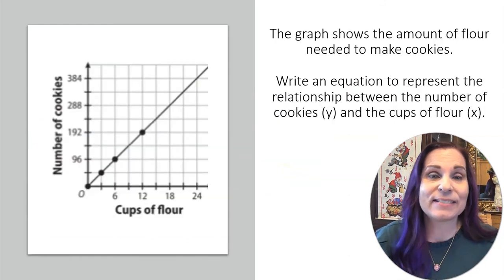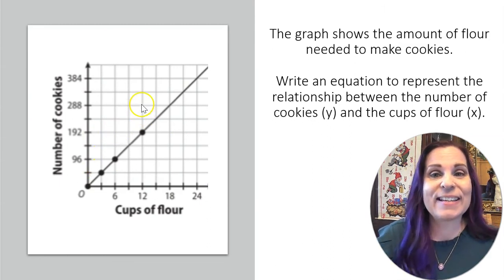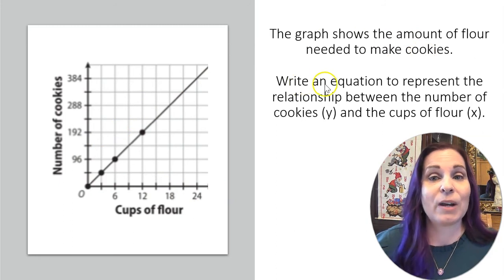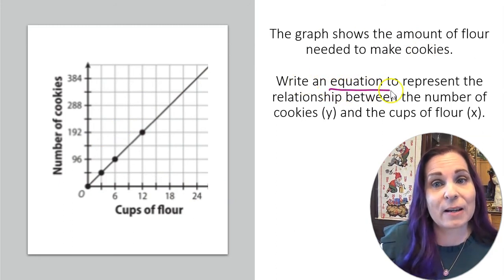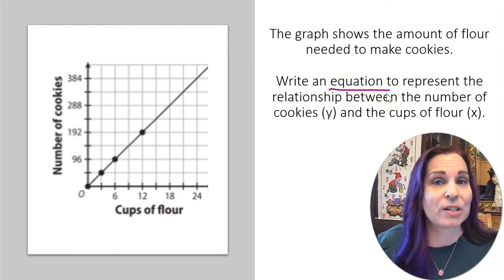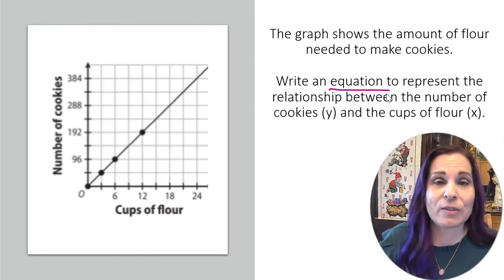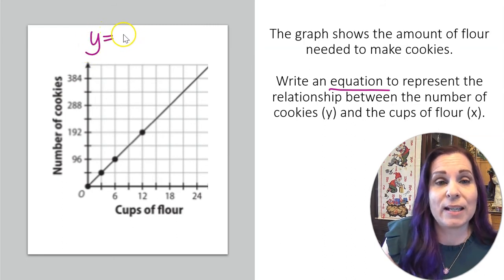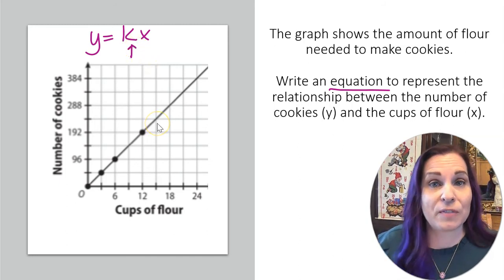All right, one more. I told you this would be easy. All right, the graph shows the amount of flour needed to make cookies. Write an equation. All right, this time we need to actually write an equation. So if you remember, way back from the first slide, I showed you that to write the equation, all we have to do is put k right there. So that means we have to find k.